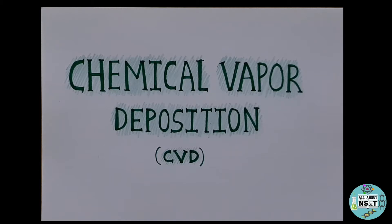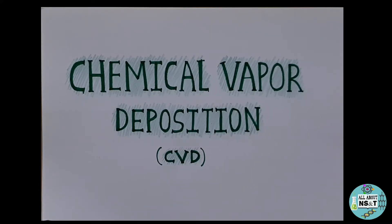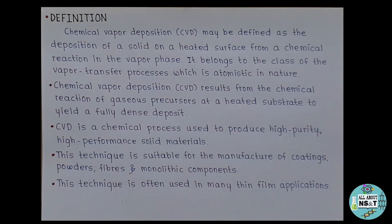Coming back to CVD — it is a generic name for a group of processes that involve depositing a solid material from a gaseous phase. It is conveniently used to obtain coatings of a variety of inorganic or organic materials. It is widely used in industry because of relatively simple instrumentation, ease of processing, possibility of depositing different types of materials, and economical viability.